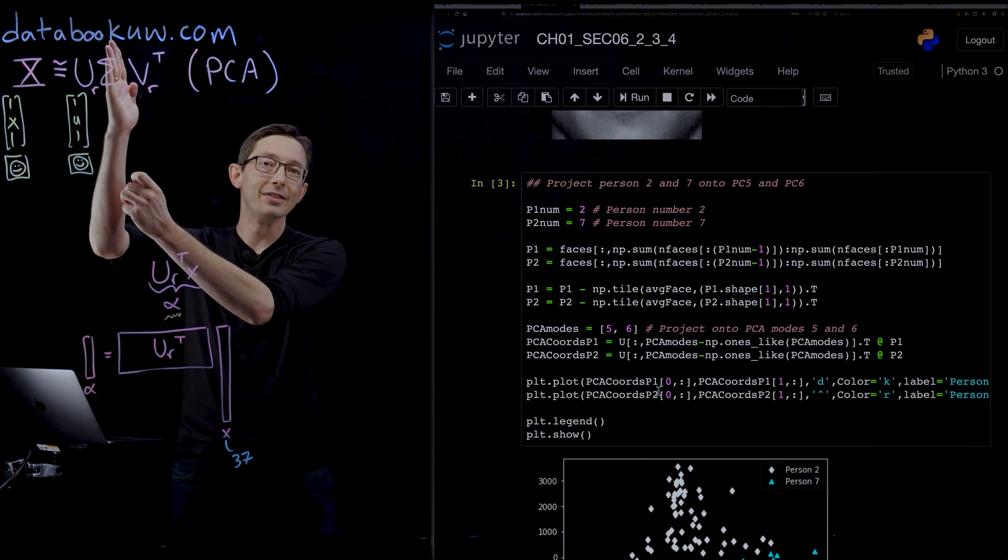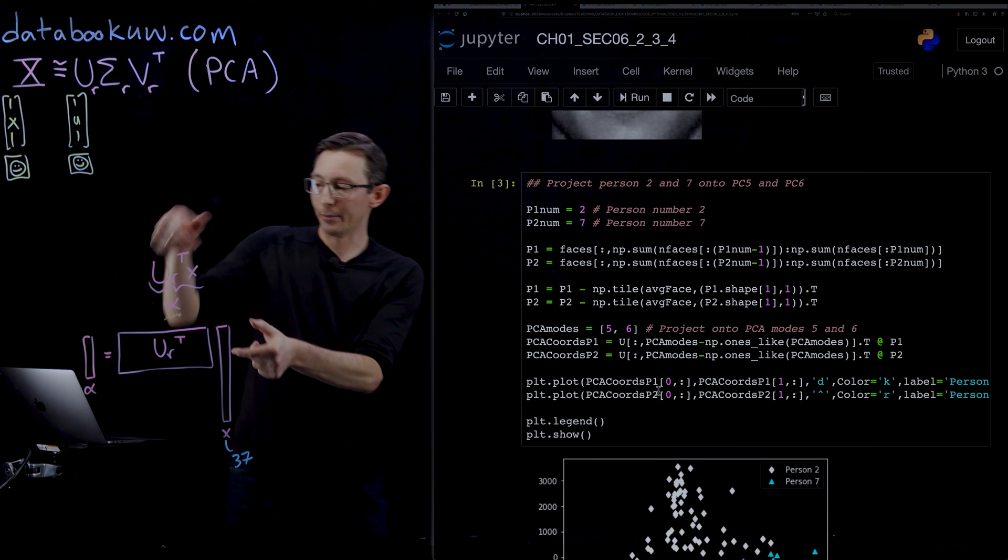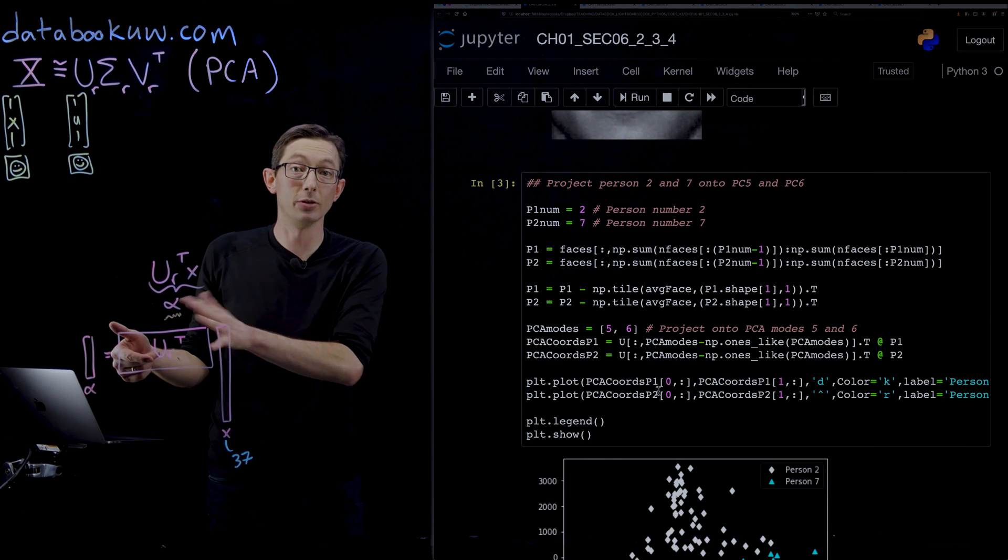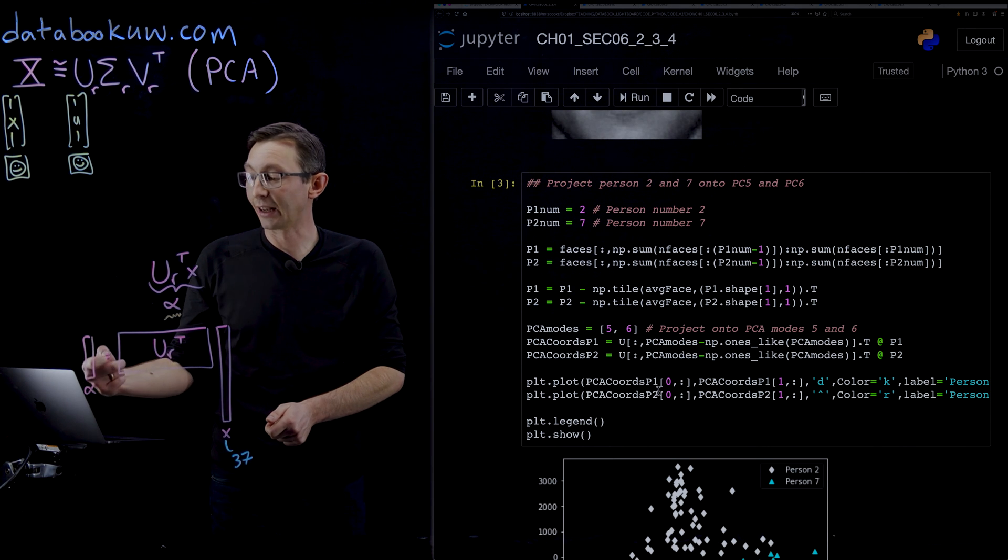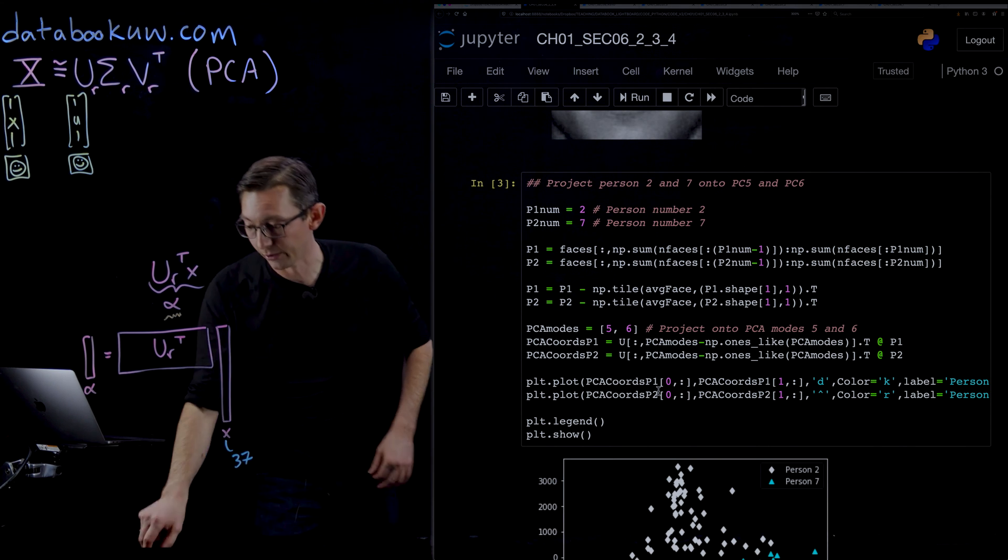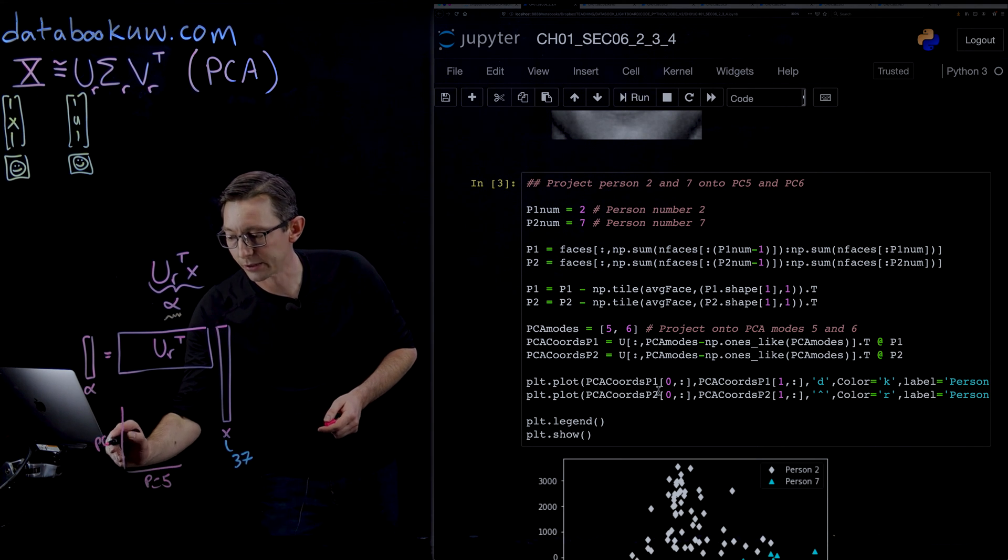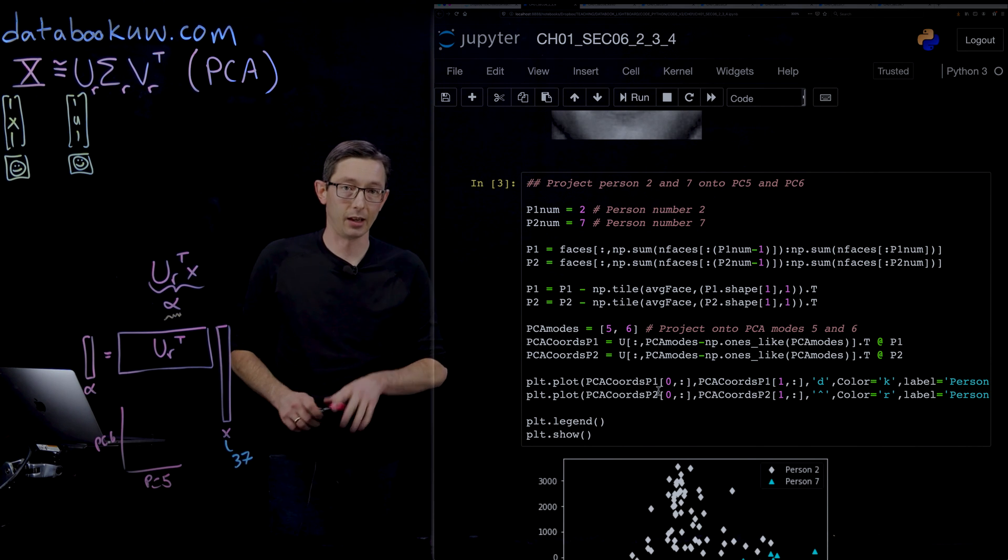I'm going to pick the fifth and sixth column of U and basically take the inner product of all of my images with those two columns. I'm going to get a two-dimensional vector alpha, and when I plot my data, I'm essentially plotting it in principal component 5 versus principal component 6.